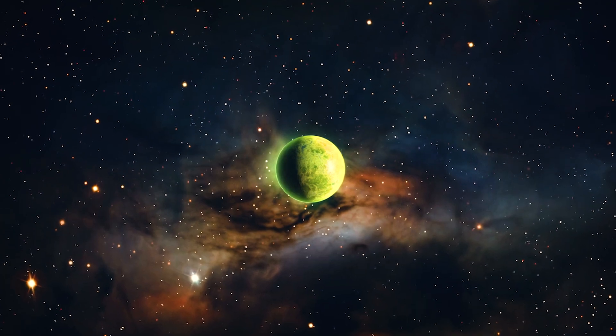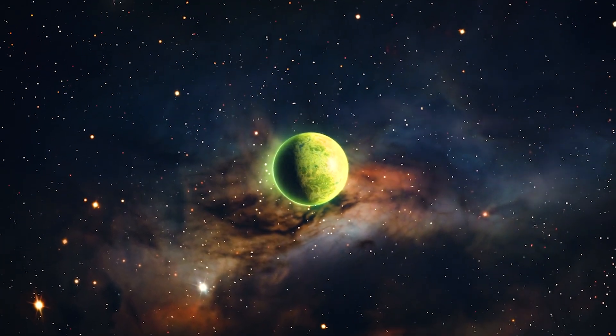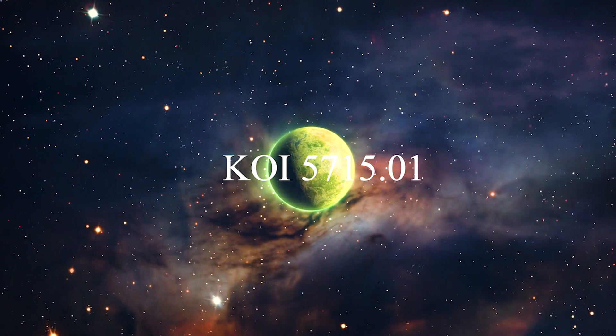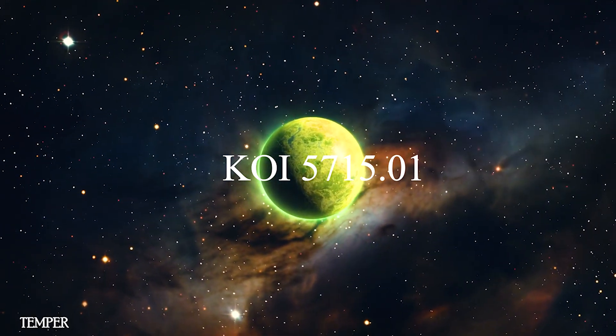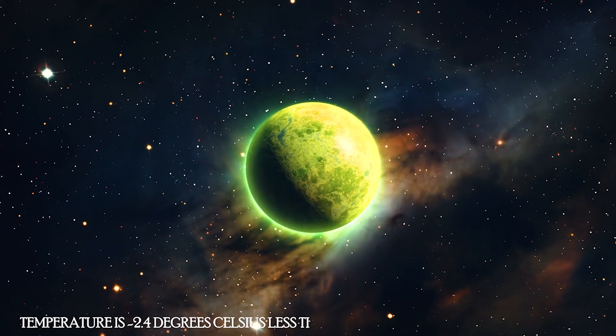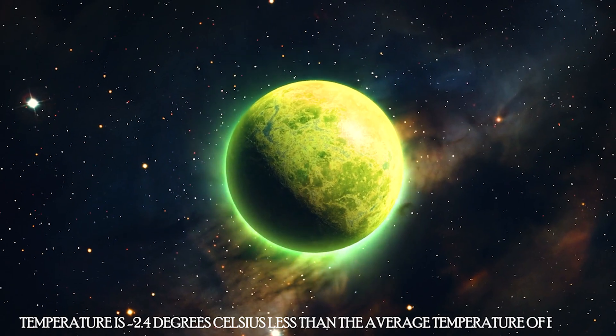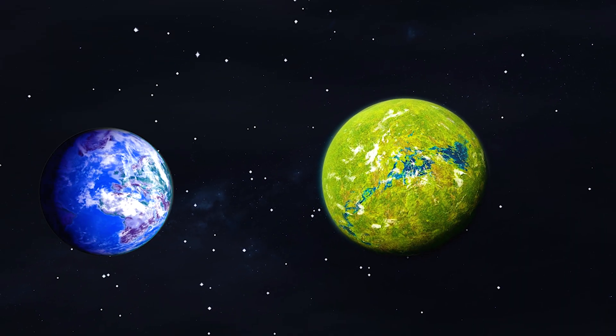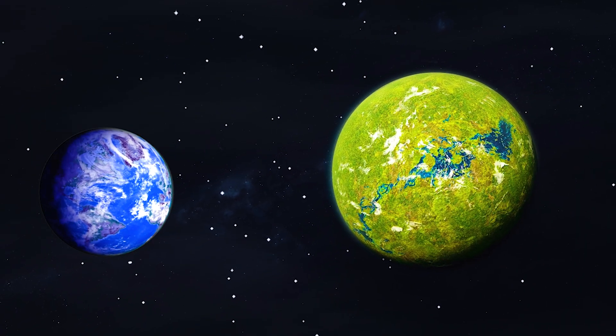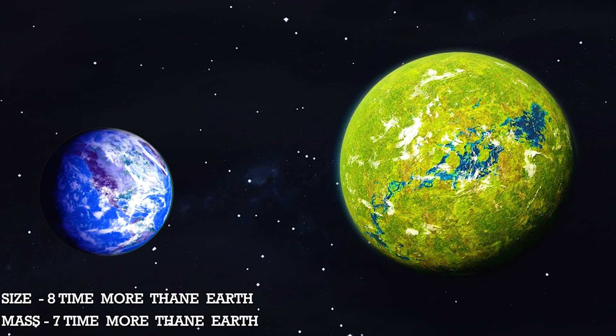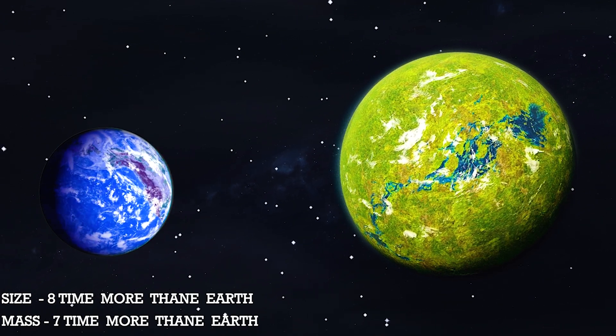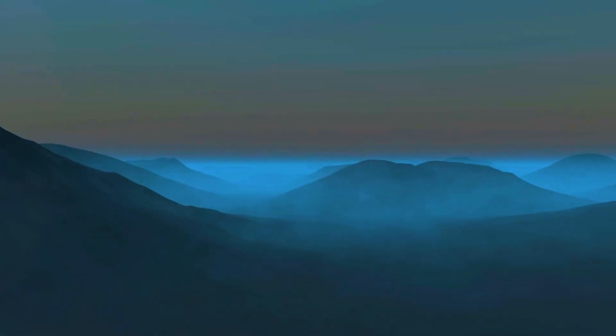The first of the two planets that scientists are particularly interested in is KOI 5715.01. Its temperature is -2.4 degrees Celsius less than the average temperature on Earth. Despite this slight difference, the planet's large size and high mass, which are eight and seven times more than Earth's respectively, make it an attractive prospect for habitability.